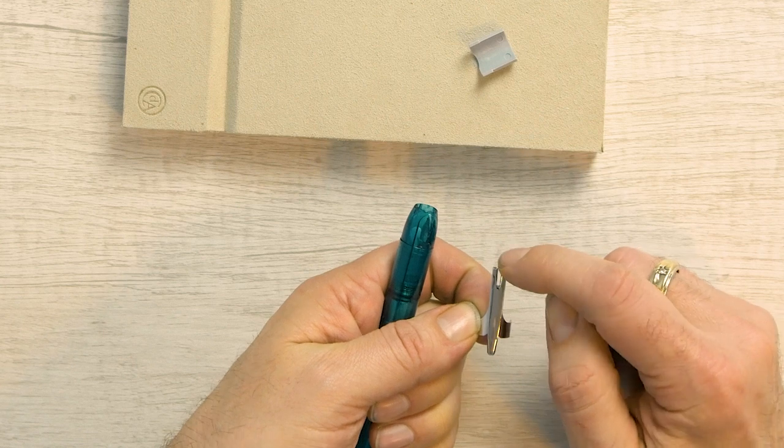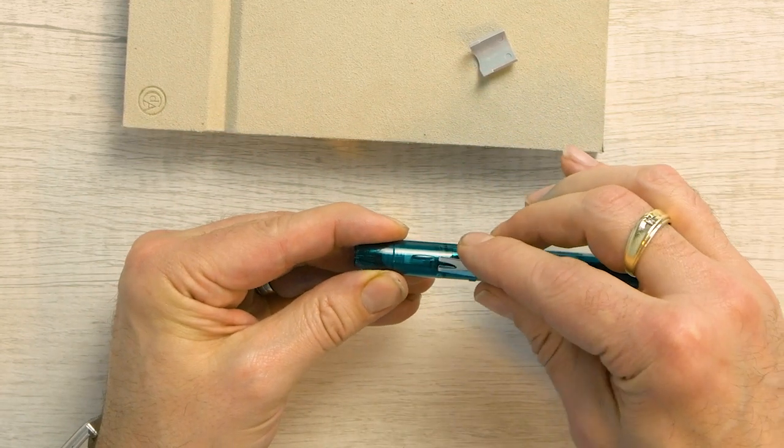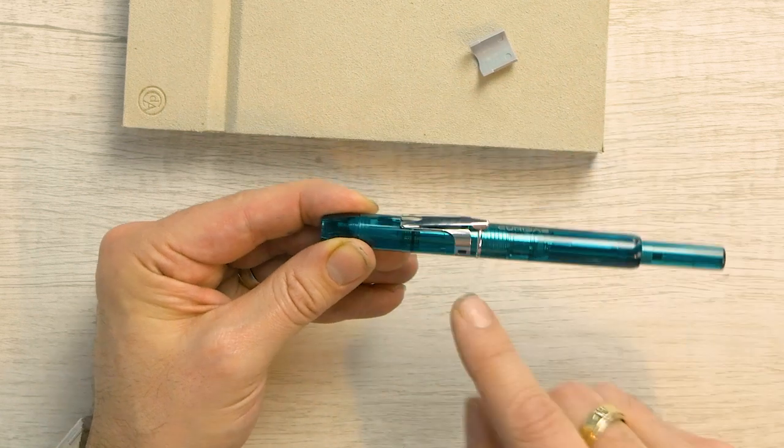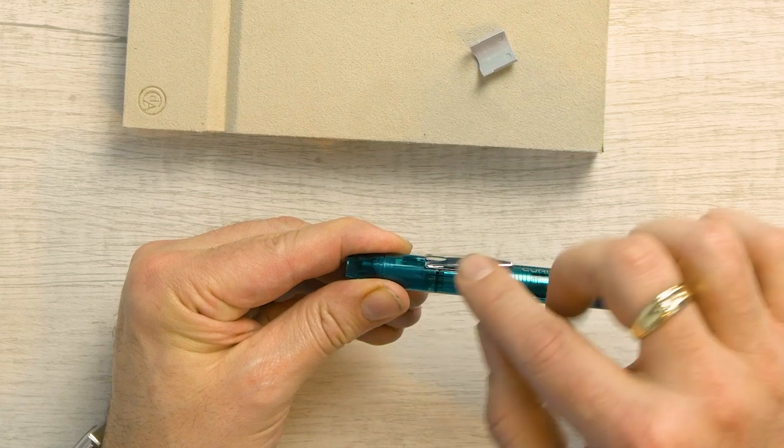we look at the clip here. So we take this little V section here and it fits in here. Now I'm going to set this clip on the cap and I'm going to line it up with this tab.